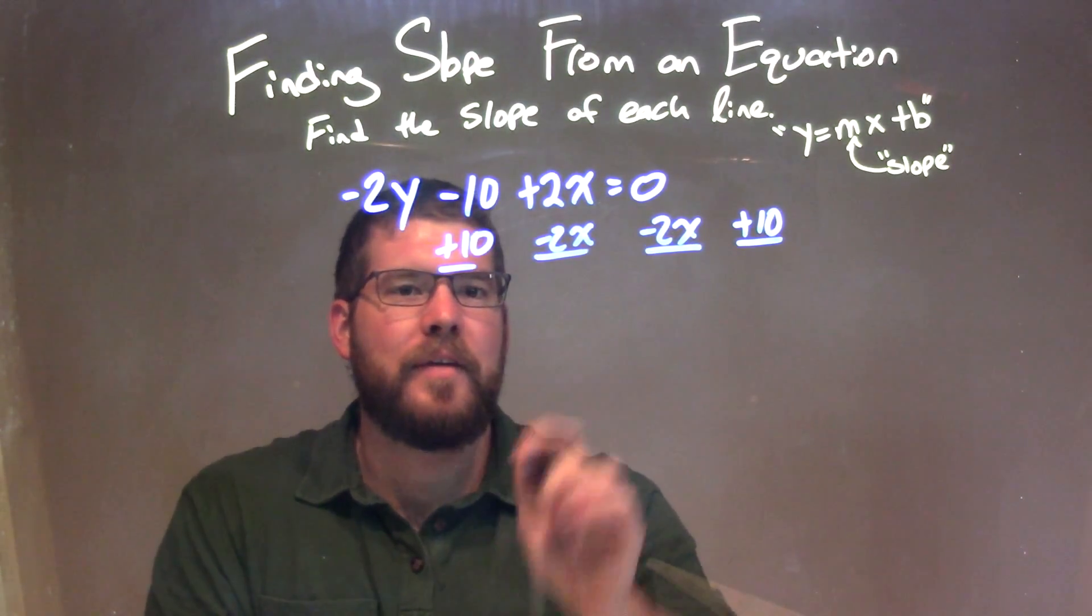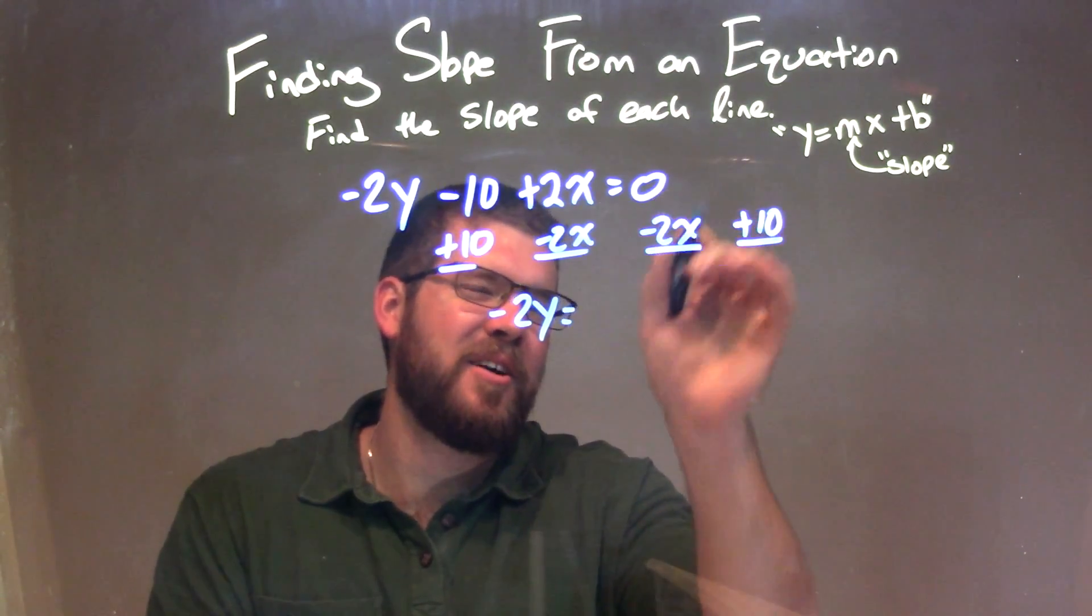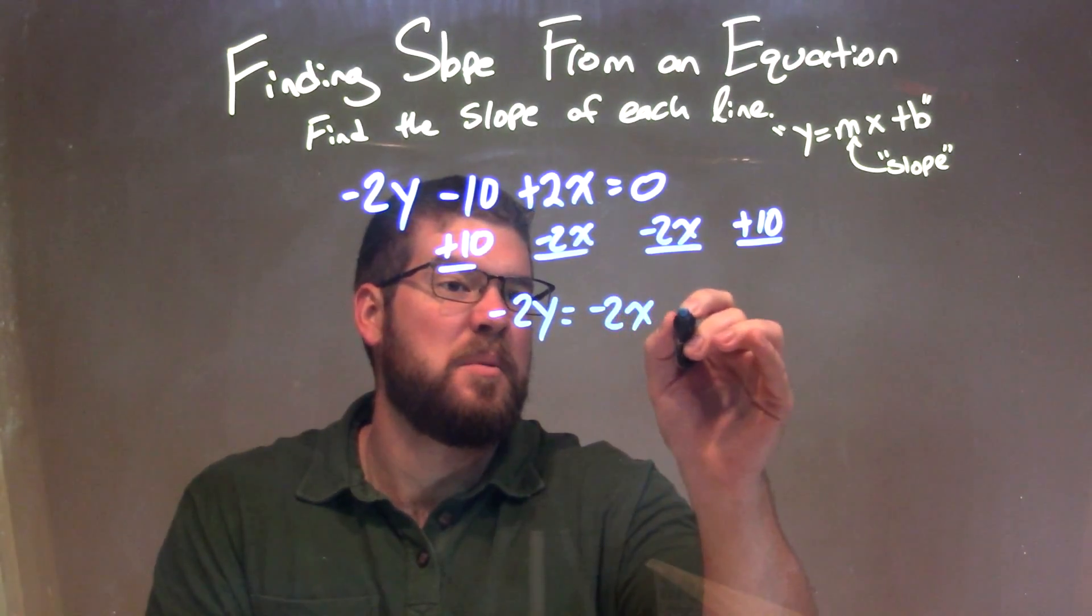Kind of doing both steps at once. That leaves you with negative 2y on the left, and on the right hand side, since it started at 0, it's just negative 2x plus 10.